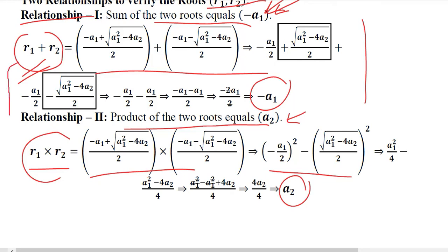However the thing to remember at this stage is that the sum and the product of these terms would be equal to minus A1 and A2 respectively and this can be used to verify if the roots are correct, that is R1 and R2.